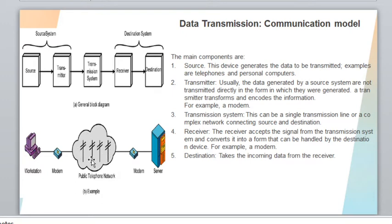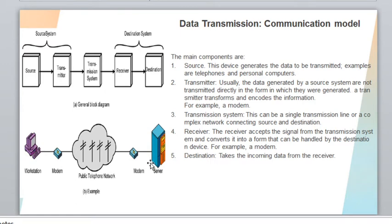Once the transmitted data arrives at a receiver station, in a network the modem can act both as a transmitter and a receiver. The receiver modem converts the encoded data into a form that can be processed by the destination. The destination node here is a server.